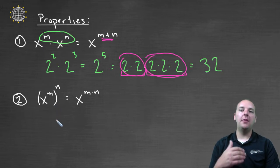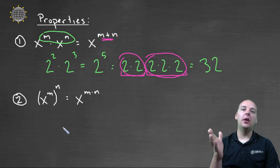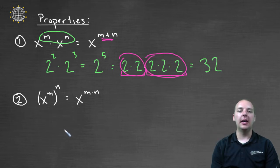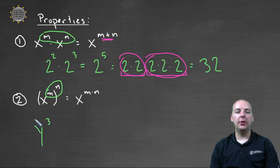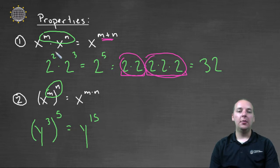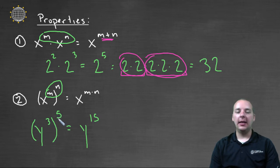The next property: what happens when you have a power to a power — an exponent of the exponent? The property says that we'll take x to the m times n. So a power to a power, we're going to multiply. Let's say we had y to the third, and all of that raised to the fifth. This property says we'd have y to the three times five, which would be fifteen. Make sure you don't confuse these — a lot of students will want to add three and five, and that's not correct. If it's a power to a power, you multiply, and we get y to the fifteenth.